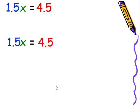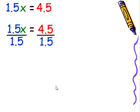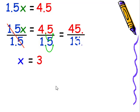We'll divide both sides by 1.5 or 1 and 5 tenths. The 1.5s will cancel, leaving us with x. 4.5 divided by 1.5 is 3. If the decimals kind of threw you off, you could move the decimals to the right one place, and here to the right one place, leaving us with 45 over 15. 45 divided by 15 is 3.